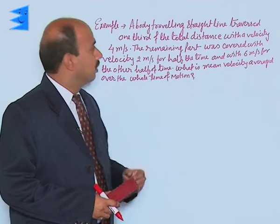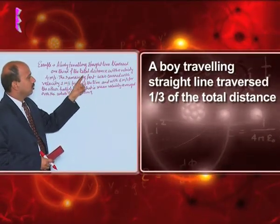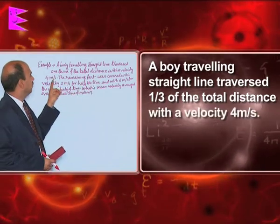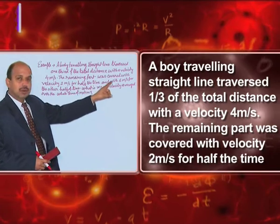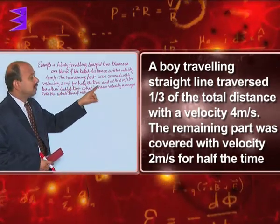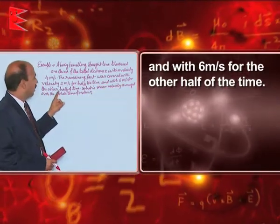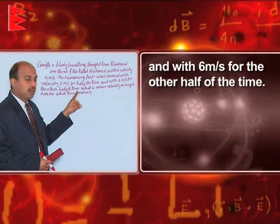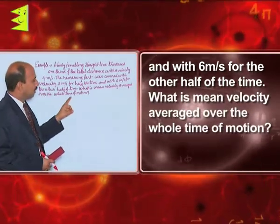Now, let us take another example. A body traveling in a straight line travels one-third of the total distance with a velocity of 4 meters per second. The remaining part was covered with a velocity of 2 meters per second for half the time and with 6 meters per second for the other half of the time. What is the mean velocity averaged over the whole time of motion?